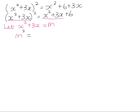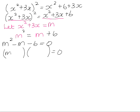We'll have m squared because the whole of x squared plus 3x is being squared. On the right-hand side, the whole of x squared plus 3x becomes m, so we get m plus 6. That's a much more manageable equation. Getting it into standard form: m squared minus m minus 6 factorizes — it's a trinomial — into m minus 3 and m plus 2. Therefore, m minus 3 equals 0 or m plus 2 equals 0.